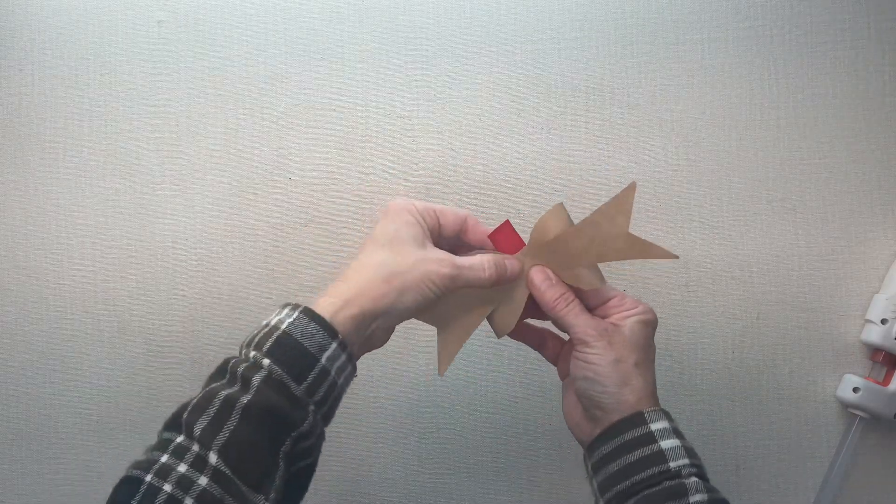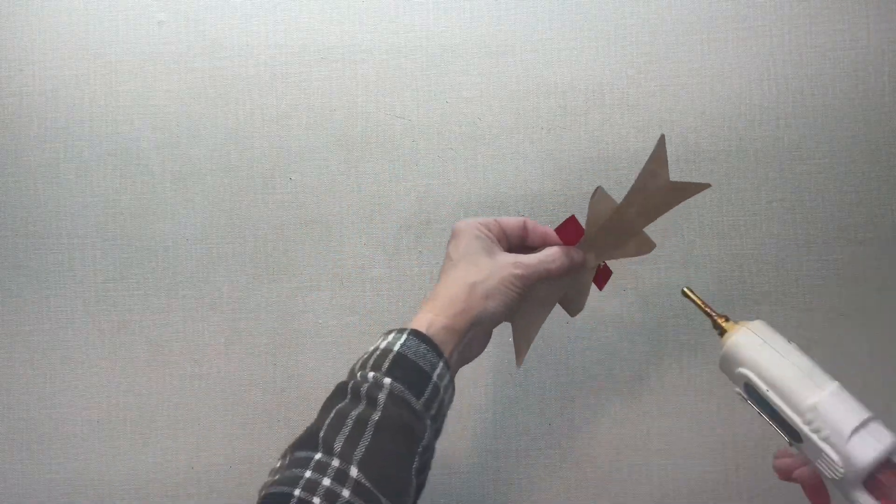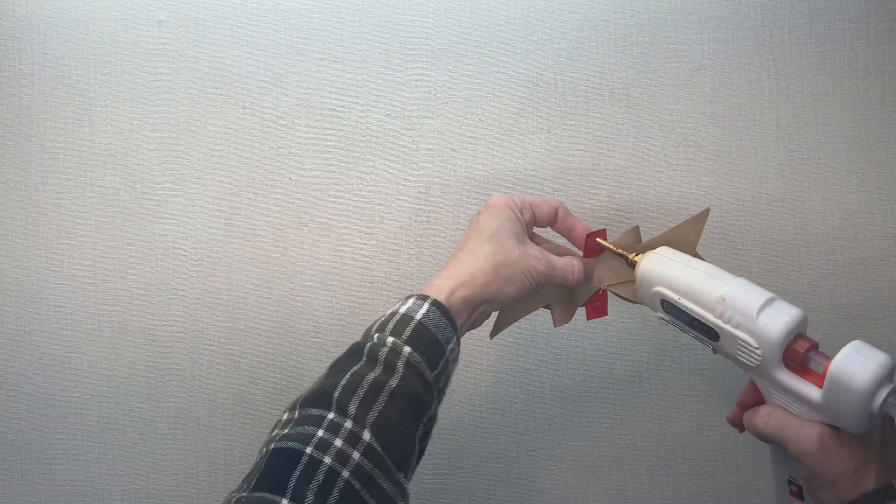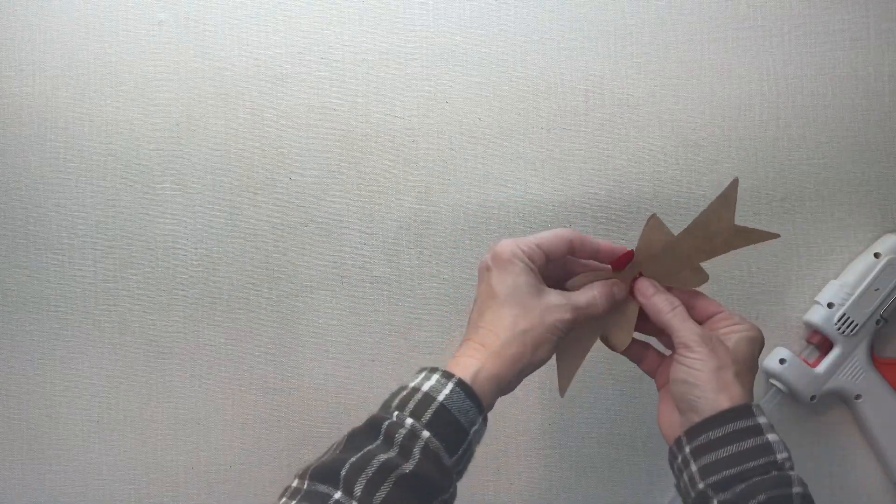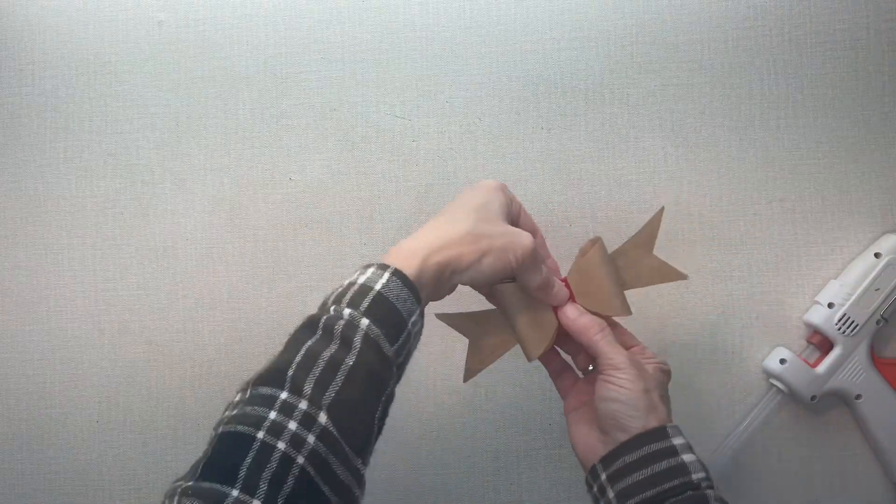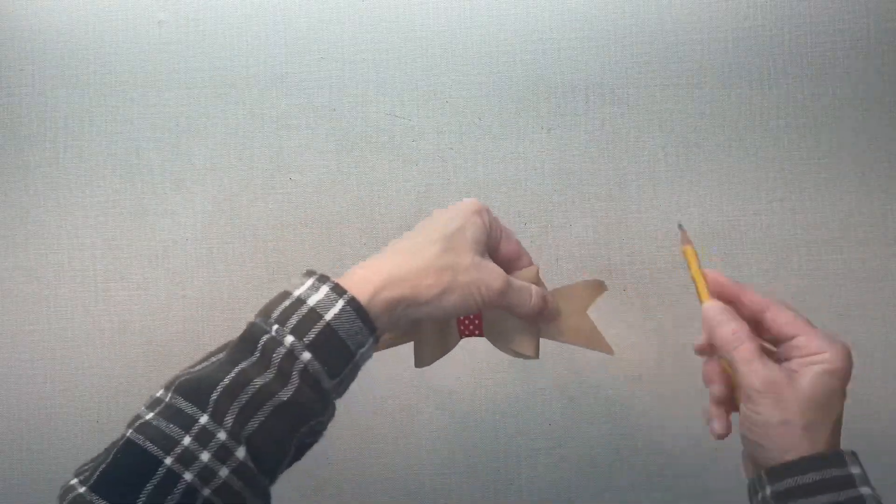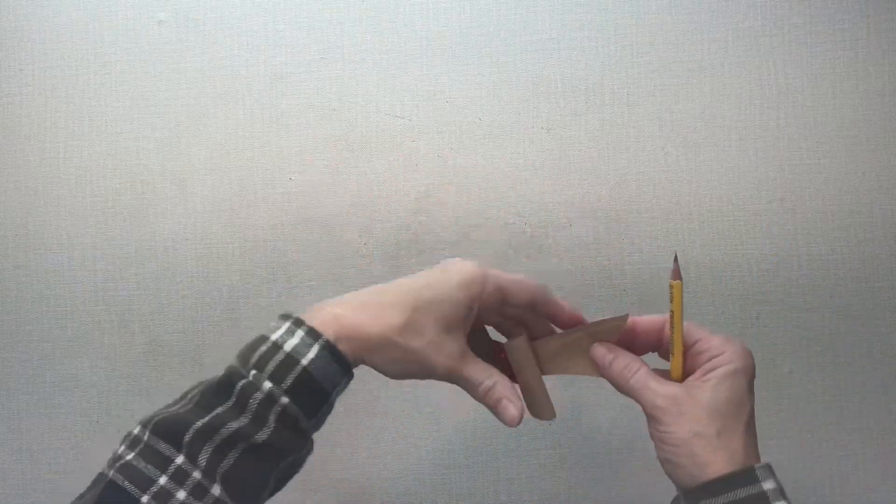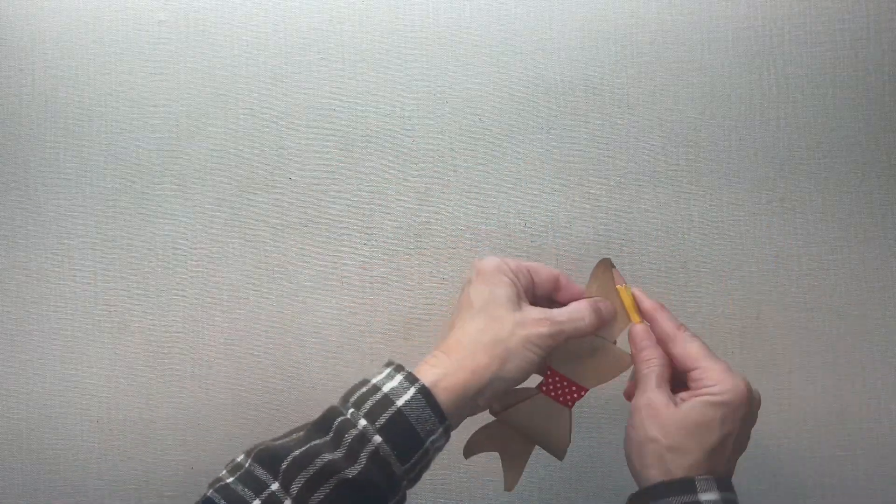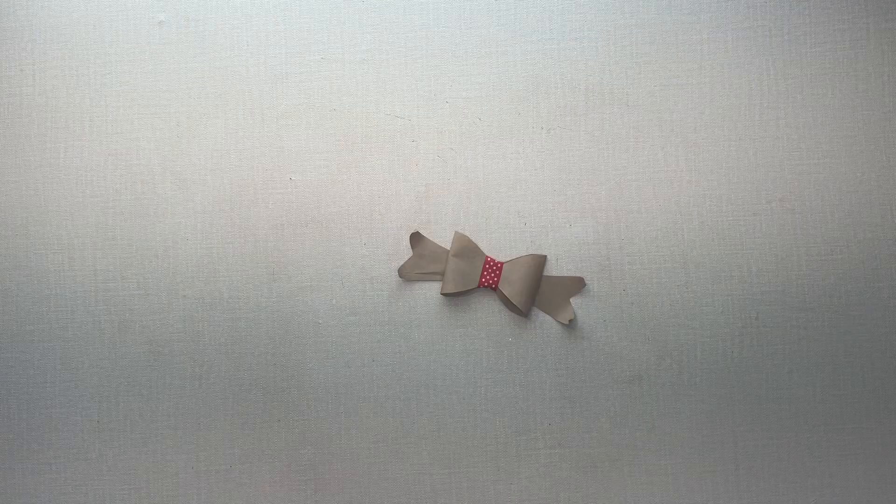And now I've taken a piece of ribbon or you could also use a piece of paper right here and gluing it around. And then I just want to curl the edges with the pencil. So that's very simple. And that's it on that.